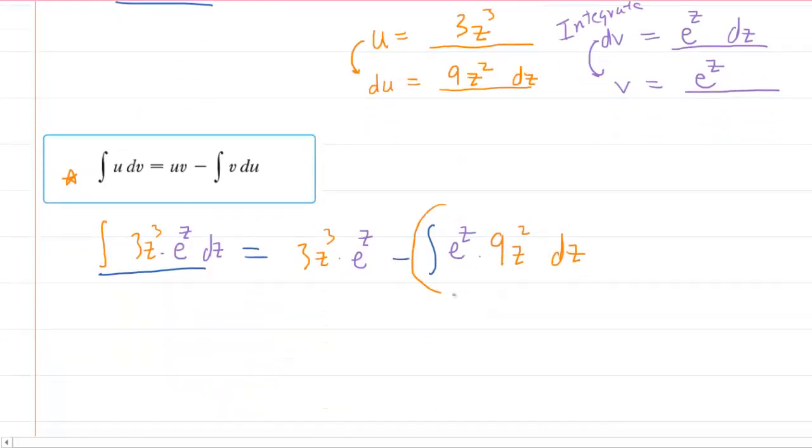So far so good, but we're not done yet because we have to evaluate this integral in order to get the final answer. Before we evaluate that integral, it might be smart for us to factor out the 9. You recall, when integrating, you can factor out constants. So we right now have 3z cubed e to the z minus 9 times the integral of z squared times e to the z dz.